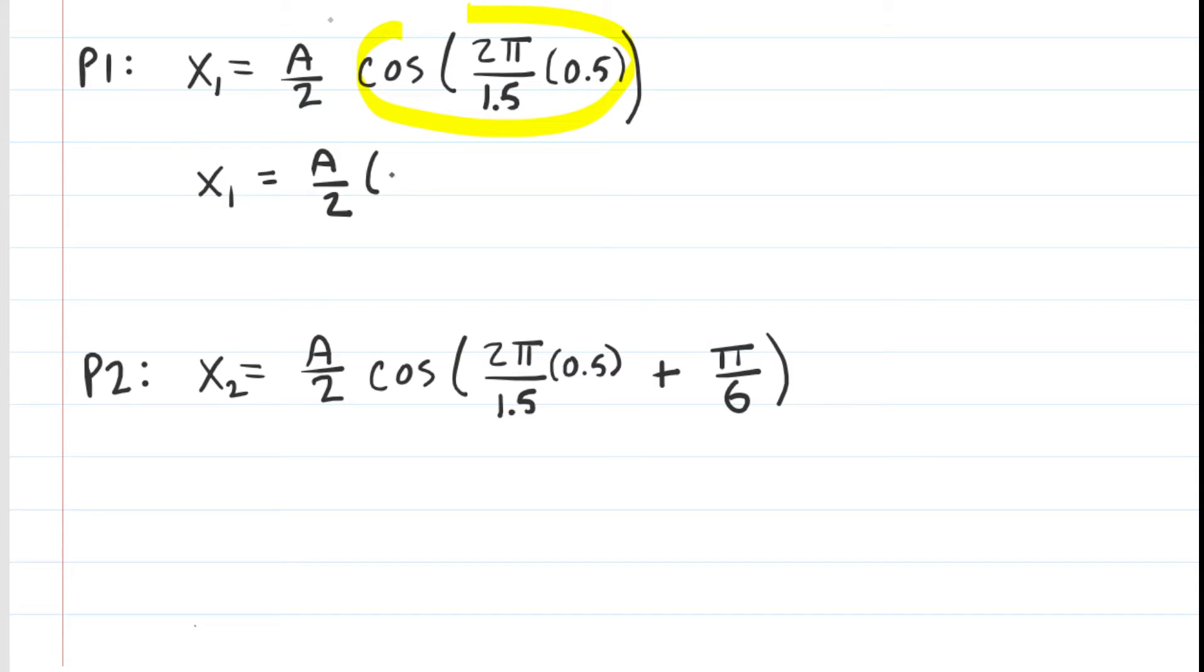When you do so, you should get negative 0.5. And then for the other situation down here, you can enter that into your calculator all at once and you would find that the position x sub 2 is equal to A over 2 multiplied by approximately negative 0.866.